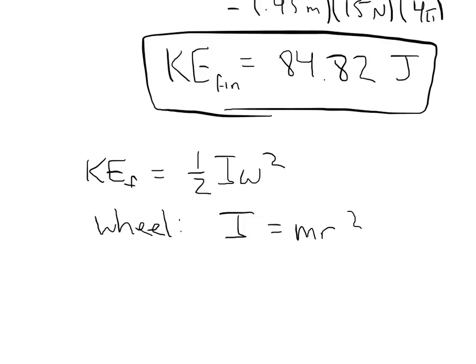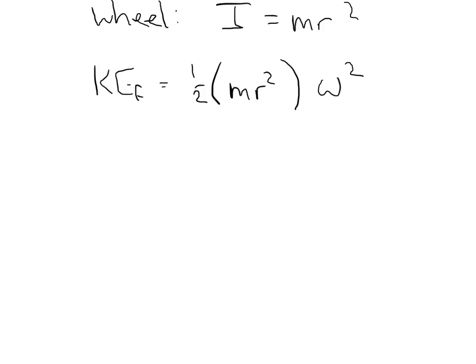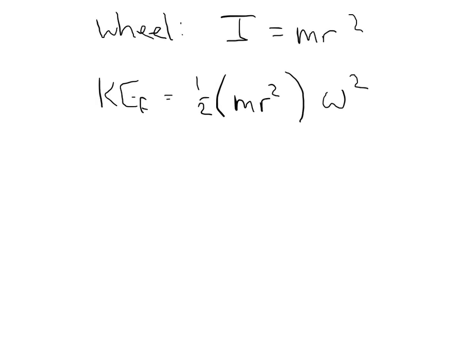Taking this equation and solving for omega, omega squared is equal to the kinetic energy, the final kinetic energy, over one-half mr squared. Omega, take the square root of both sides, is just going to be equal to this number.